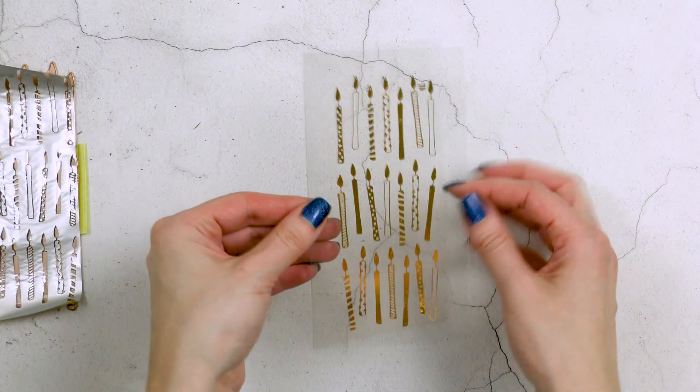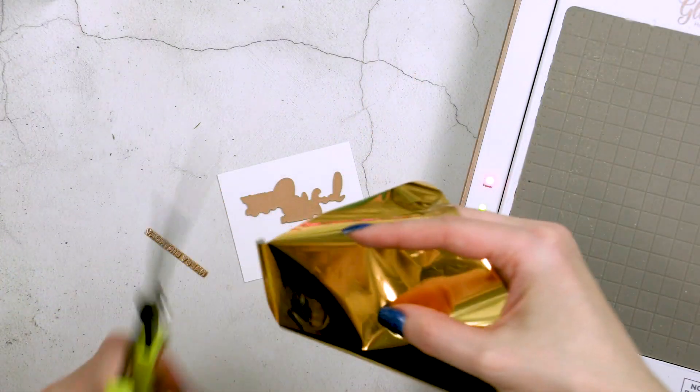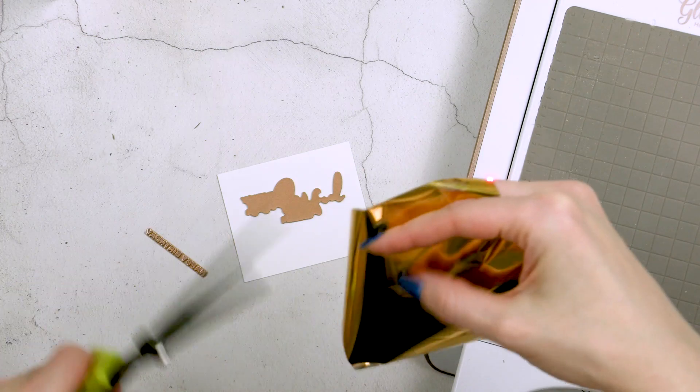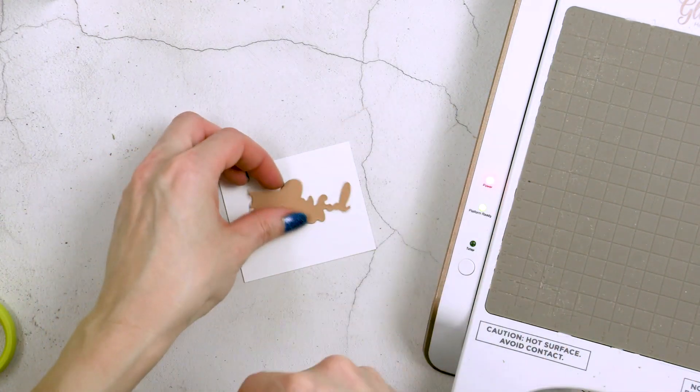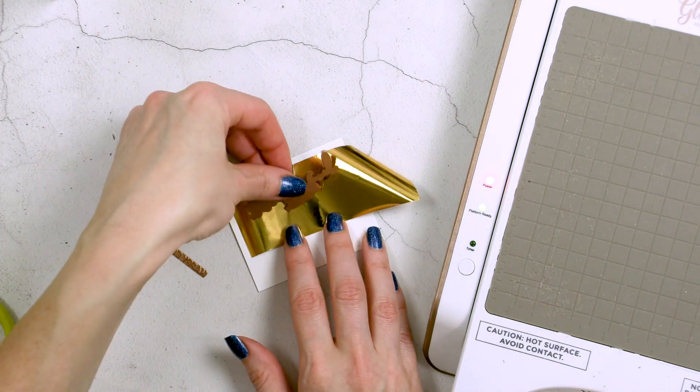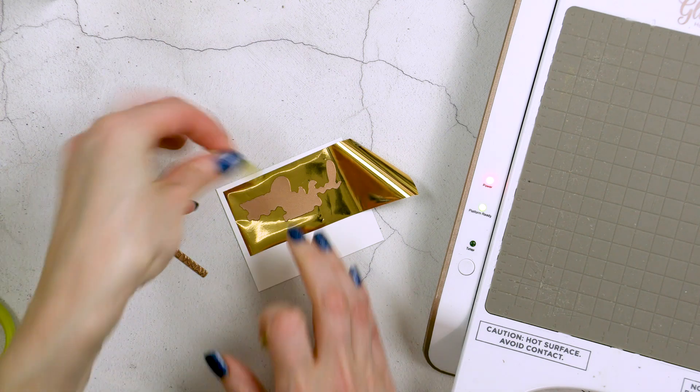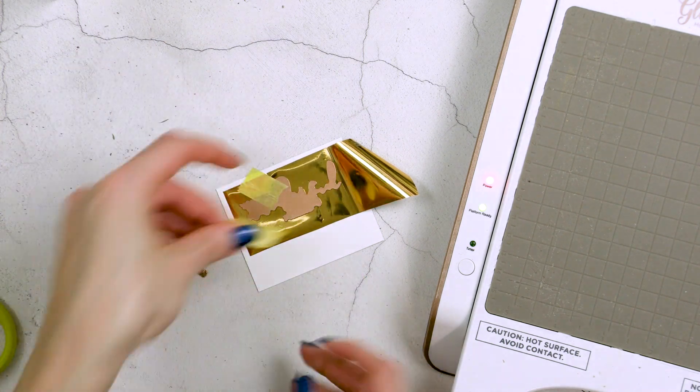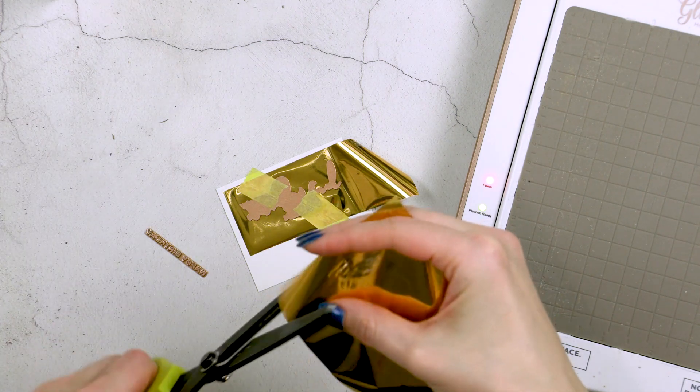While I have my glimmer hot foil system on my desk, I'm also going to foil a couple of other elements for my projects. So I need the sentiments. Now to foil the sentiments, I am using my Yana's special sentiments glimmer set. I'm going to foil one that reads, you are a wonderful friend, happy birthday. And then I will also later foil one that says, make a wish, I hope it comes true.